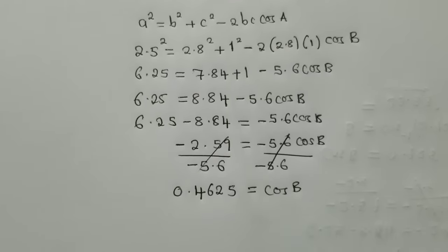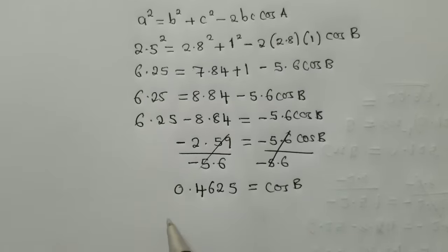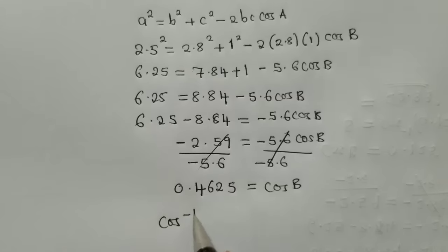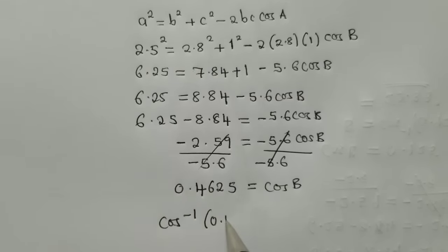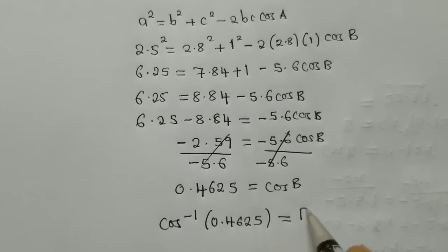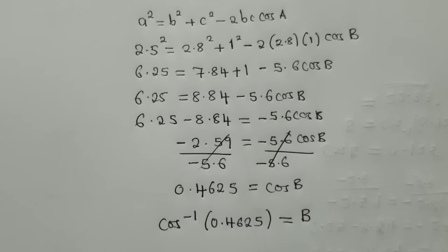So now to solve for B, we just find the cos inverse. So I'm going to say cos inverse of 0.4625. It will be equal to B. So what is the cos inverse there?